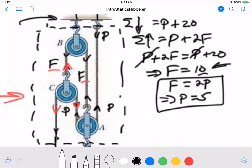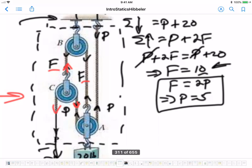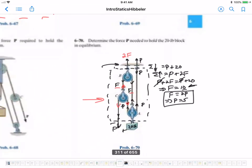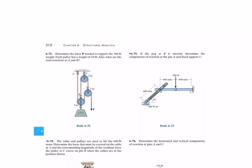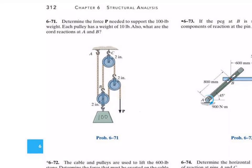That problem works out easier than you might have thought at the beginning. Now let's look at another problem on the next page of Hibbler. Problem 6-71: Determine the force P needed to support the 100-pound weight. Each pulley has a weight of 10 pounds. Also, what are the cord reactions at A and B? A is at the top, coming down from the attachment to a beam or ceiling, and B is that force at the bottom pulley in the center.